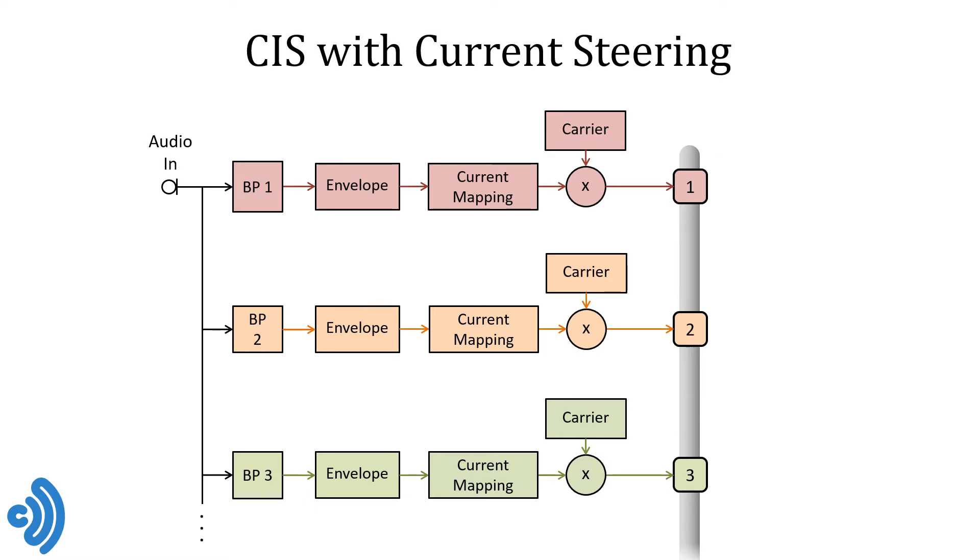So let's go forward and think about coding strategies. How can we combine current steering with the behemoth of coding strategies, high rate continuous interleaved sampling, which has proven itself to be very effective? You will remember this structure here from Professor Oxenham's introductory presentation. It is showing plain vanilla CIS in its most basic form. We have a bank of bandpass filters. For each filter output, we compute the envelope, map that value in some compressive, monotonic way to a stimulation current level, and we use these mapped amplitudes to modulate a biphasic pulse train. Biphasic, of course, so that the current integrates to zero because a net DC current would cause permanent damage to the tissue. Finally, we observe that the pulses are delivered staggered or interleaved in time, one by one to reduce crosstalk and interaction between the channels.